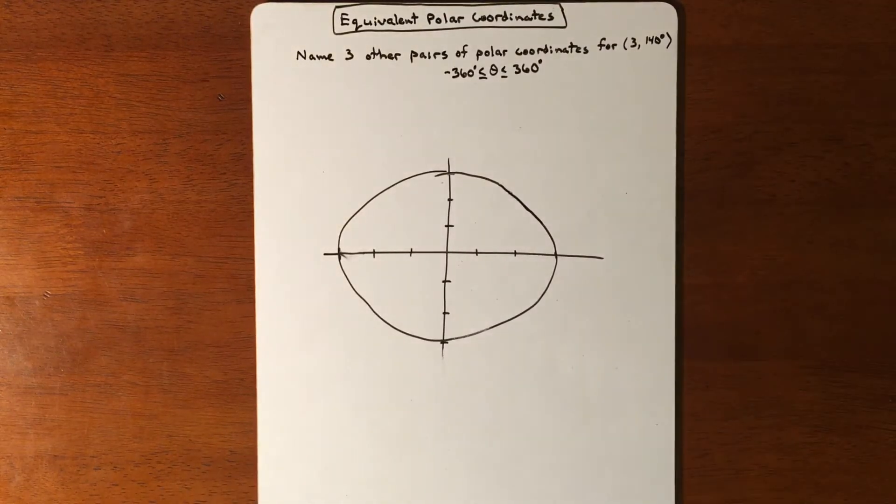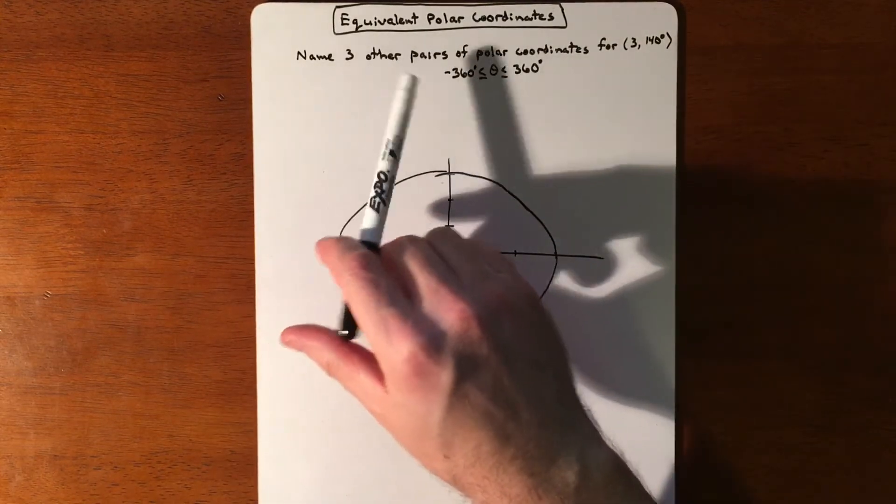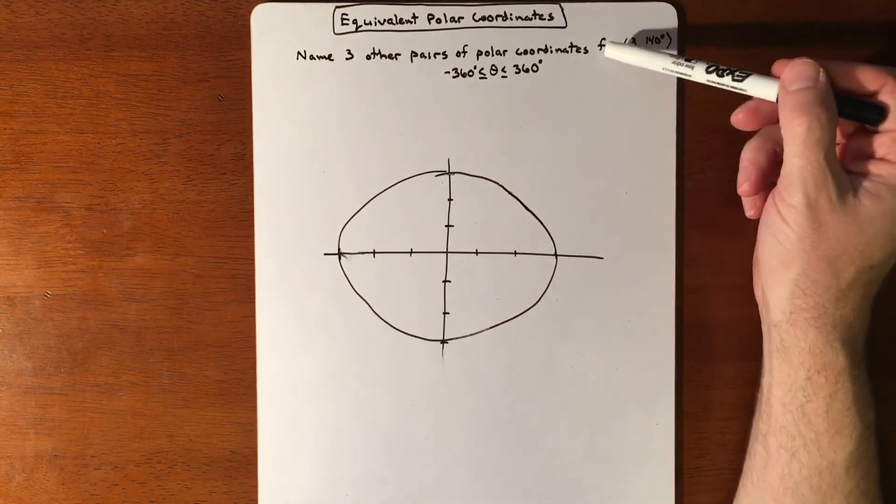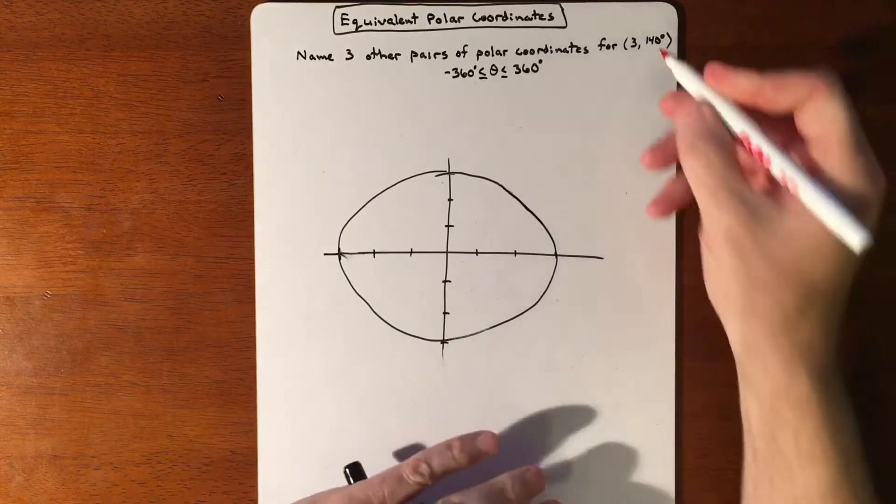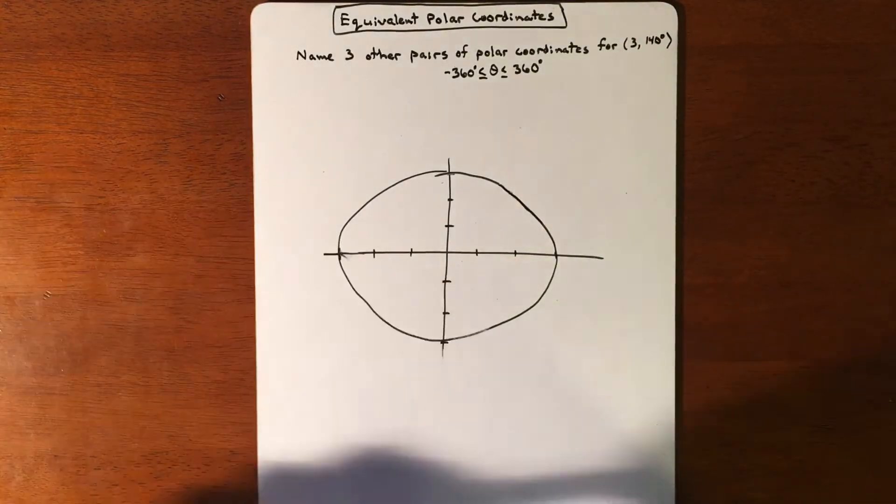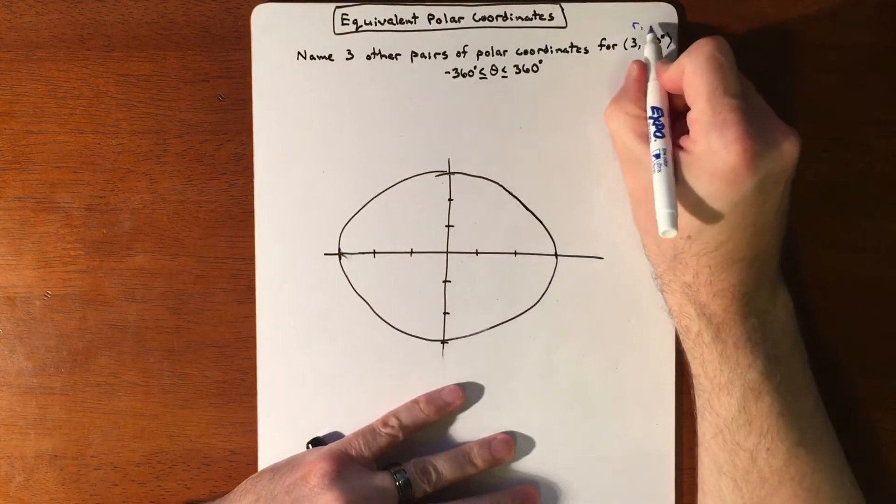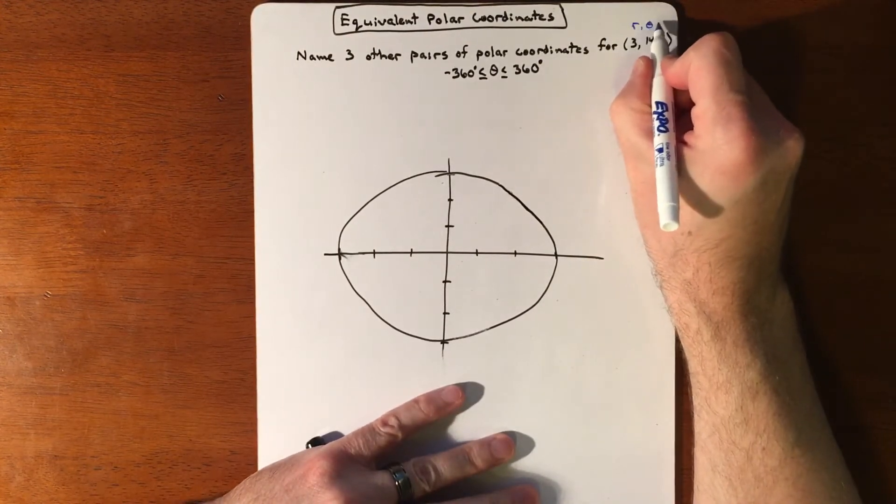In this video, we are going to talk about some equivalent polar coordinates. We're going to name three other pairs of polar coordinates for this point right here. Remember that your polar coordinates is your radius and your angle.